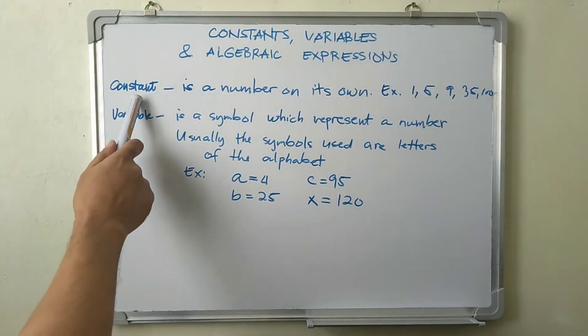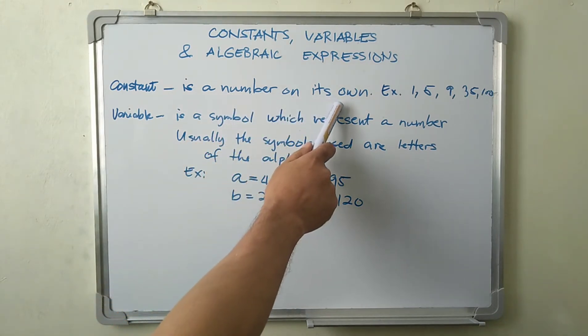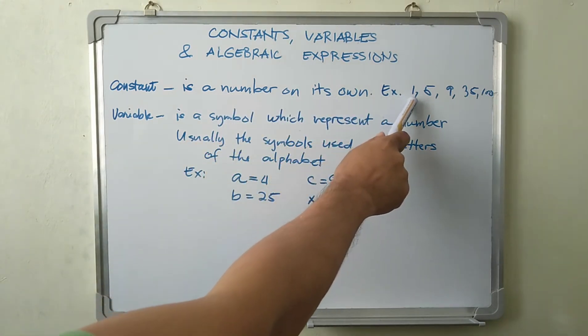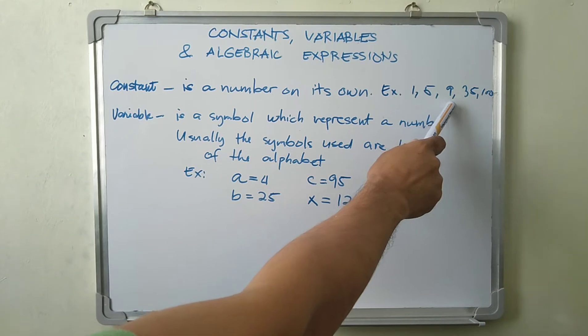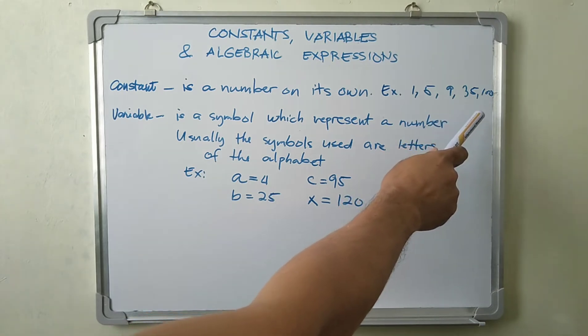A constant is a number on its own. For example, 1, 5, 9, 35, 100 or any number that you can choose.